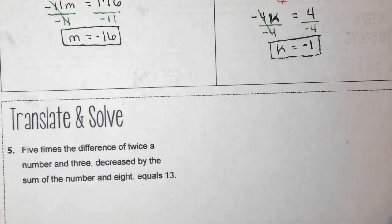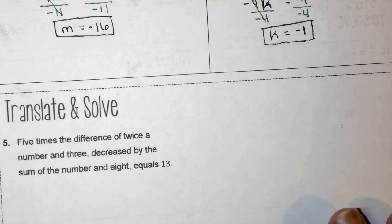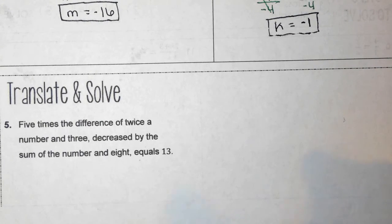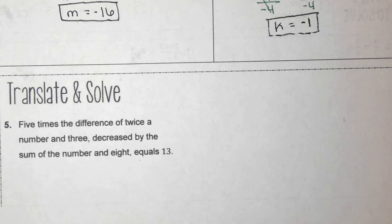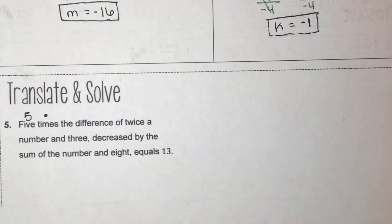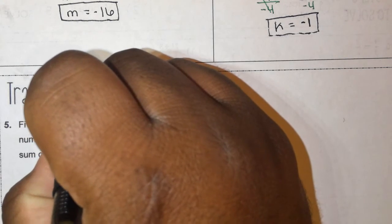On the bottom of the page is a Translate and Solve problem — a multi-step equation written out in sentence form that we have to translate to write the equation and solve. Number 5 says: 5 times the difference of twice a number and 3, decreased by the sum of a number and 8, equals 13. The first thing is '5 times' — that's multiplication. The word 'difference' means subtraction.